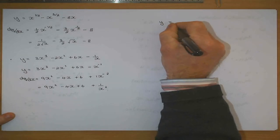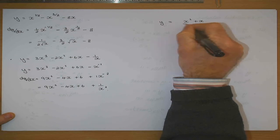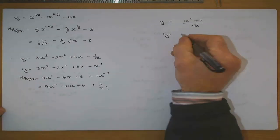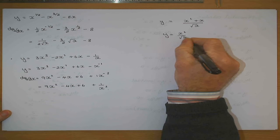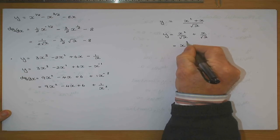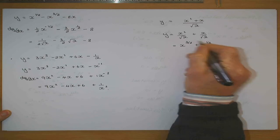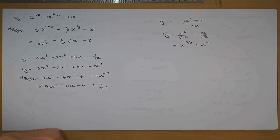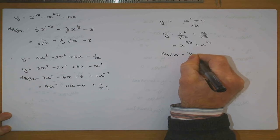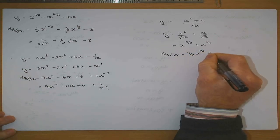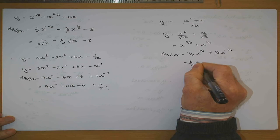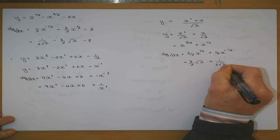If y is equal to x squared plus x over root x, I can divide root x into both terms. So it becomes x squared over root x plus x over root x. When dividing, you subtract the powers, giving y equal to x to the 3 over 2 plus x to the one half. Therefore dy/dx is 3 over 2 times x to the power of a half, plus one half times x to the minus a half, which is 3 over 2 root x plus 1 over 2 root x.